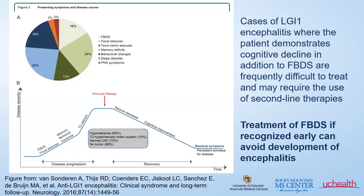It's important to recognize that patients who present only with FBDS — if this is recognized early and treatment is initiated — we can actually avoid the development of encephalitis. Furthermore, in cases where patients have encephalitis or cognitive decline at presentation, these cases are often harder to treat and require second-line therapies beyond just steroids, sometimes IVIG or plasma exchange, and often second-line therapies such as rituximab.